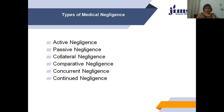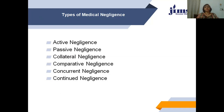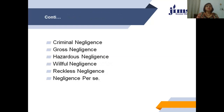Regarding types of medical negligence: on the basis of judicial pronouncements, the following are the types of medical negligence which occur in the medical profession — active negligence, passive negligence, collateral negligence, comparative negligence, concurrent negligence, continued negligence, criminal negligence, gross negligence, hazardous negligence, willful negligence, reckless negligence, and negligence per se.